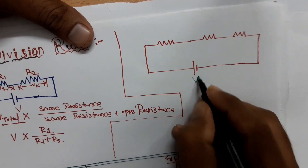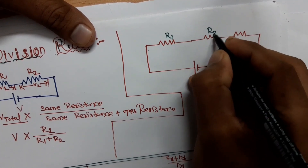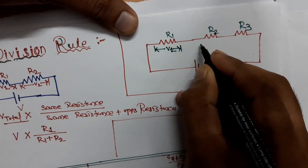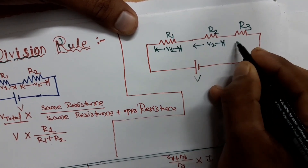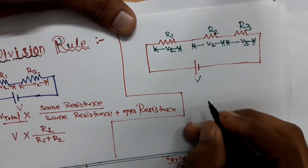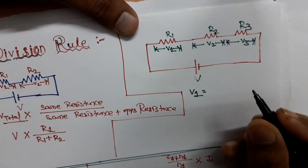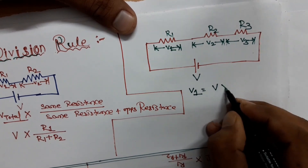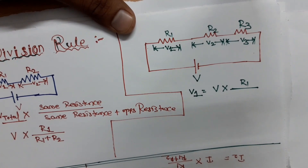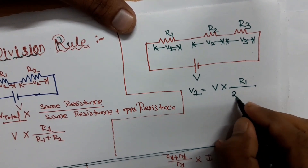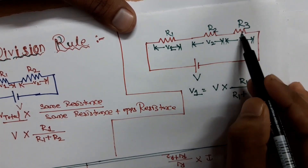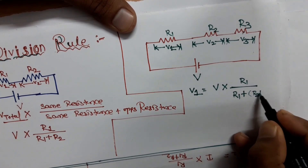With three resistors, we have V1, V2, and V3 across each resistor. To find V1: V1 equals the total voltage V multiplied by the same resistance R1, divided by the same resistance R1 plus all other resistances. Since R2 and R3 are connected in series, the denominator is R1 plus R2 plus R3.